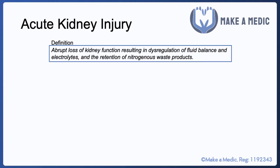Let's look at the actual definition of acute kidney injury. It's defined as an abrupt loss of kidney function resulting in dysregulation of fluid balance and electrolytes and the retention of nitrogenous waste products. If you just think about what the normal functions of the kidneys are, in AKI all of them tend to go slightly awry.